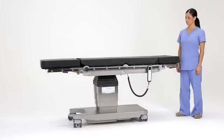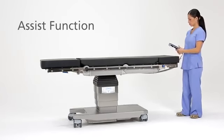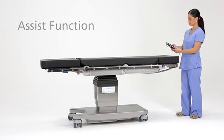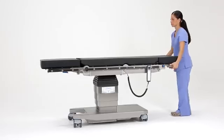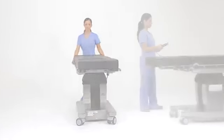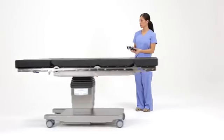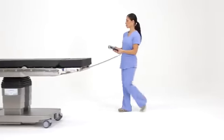The TruSystem 7000's unique fifth wheel increases mobility by enabling the clinician to easily maneuver the table safely while transporting it inside and outside of the OR. It also allows surgical team members to easily rotate and reorient the table for certain procedures. As an optional feature, the fifth wheel can be self-propelled, allowing you to effortlessly drive the table throughout the hospital.